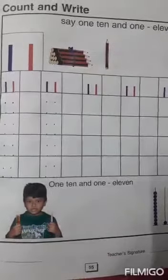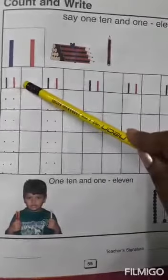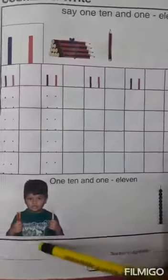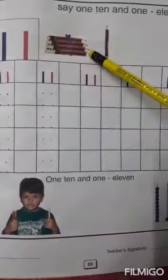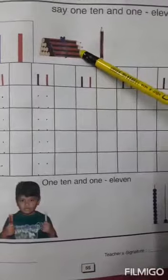Children, before we start how to write number 11, first we will do few activities which are given here. Now look here children, what are these? These are pencils. Now let's count how many pencils are here. Count along with teacher.